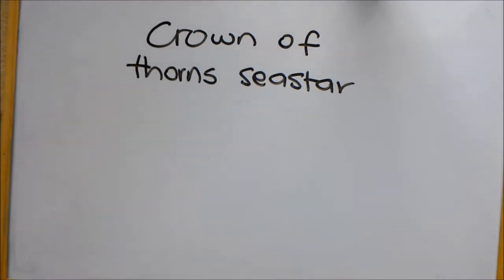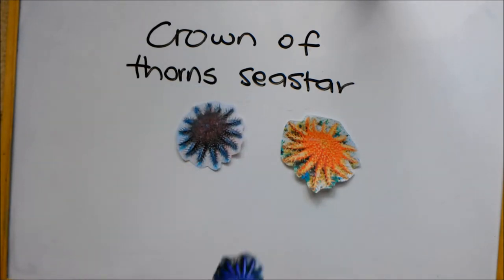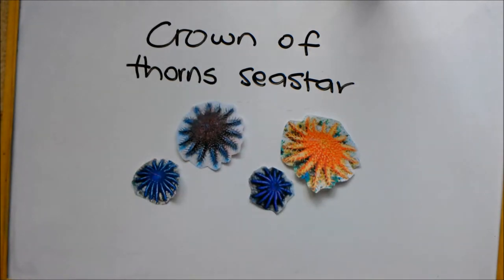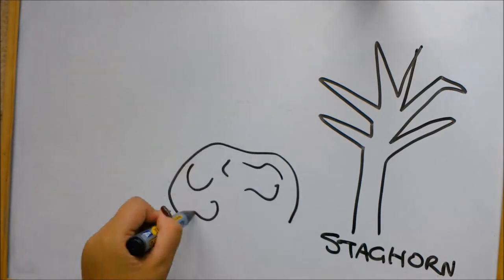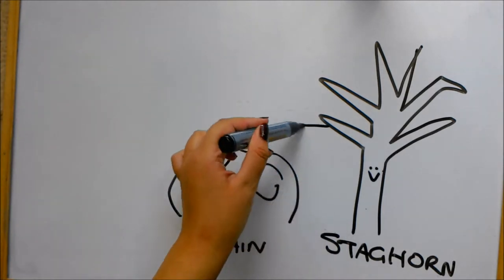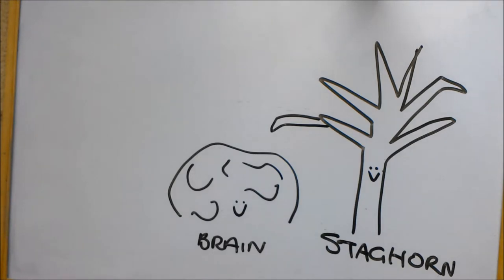The crown of thorns sea star feeds on a wide variety of corals. In a healthy reef, coral-eating sea stars are beneficial because they can control growth for faster growing corals such as staghorn, which gives a chance for slower growing corals such as brain corals to grow.